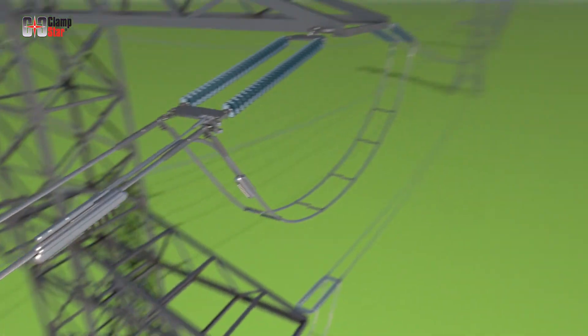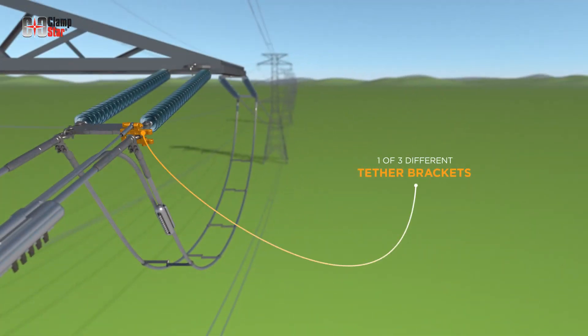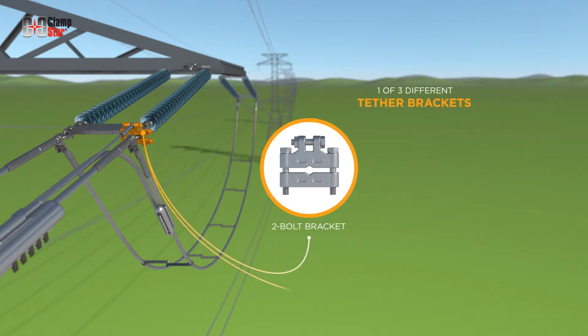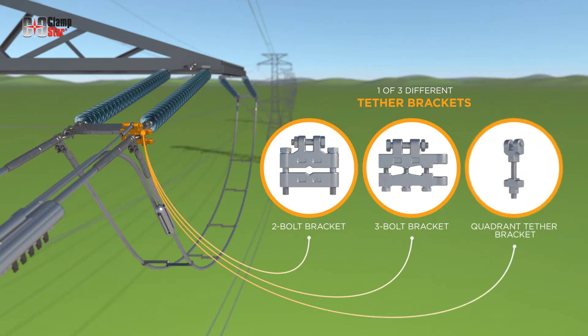During the ordering process, one of three different tether brackets was selected for the intended connection configuration and subsequently provided with the ClampStar shipment. These brackets are designed to fit a variety of applications on eyes configured either vertically or horizontally. They are either a two-bolt bracket, a three-bolt bracket, or the quadrant tether bracket.